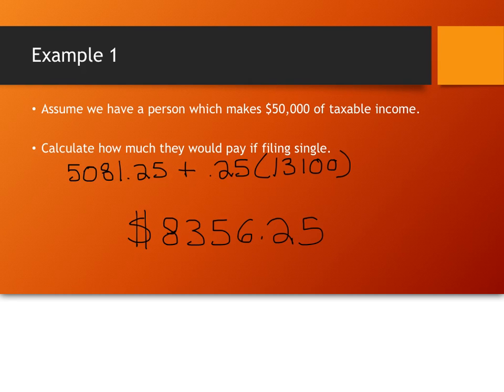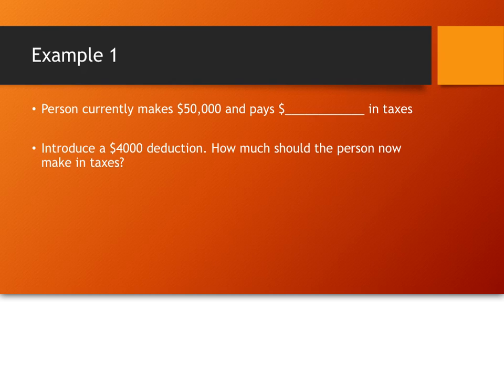So what we're going to do is we're going to adjust this person. We're going to give this person some deductions and tax credits and see how that all works. Alright, so currently we pay $8,356.25 in taxes. So let's introduce a $4,000 deduction.